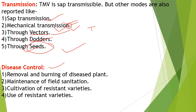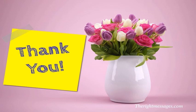Control of TMV disease: first, identify infected plants in the field, uproot them, and burn them to prevent disease spread. Second, maintain field sanitation — ensure there are no infected plants in nearby locations. Third, use disease-resistant varieties released by government agricultural or horticultural institutes. This concludes our discussion of tobacco mosaic virus (TMV). Hope you understand the basic concepts. If anyone has questions or queries, they can ask freely. Thank you and have a nice day.